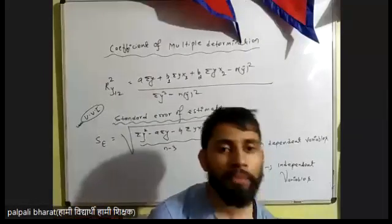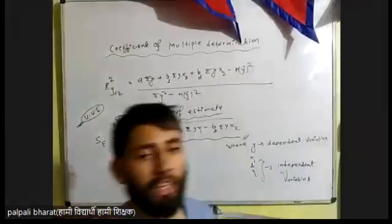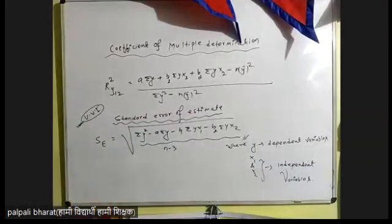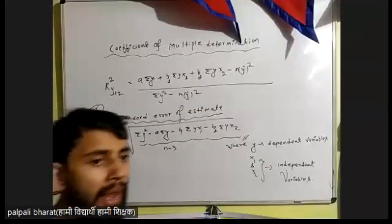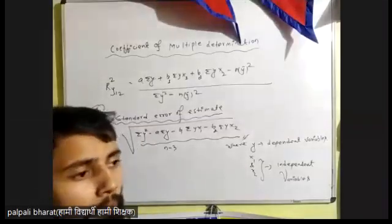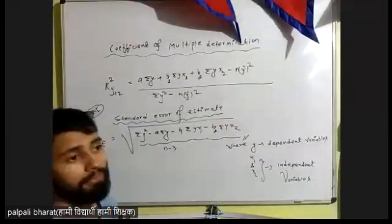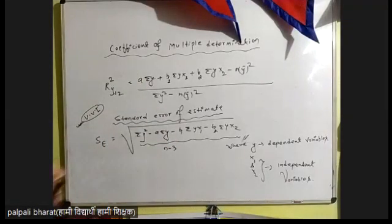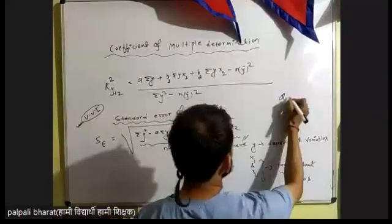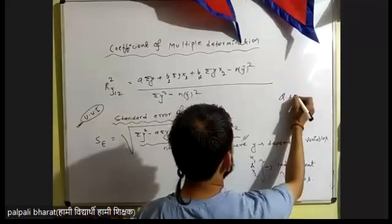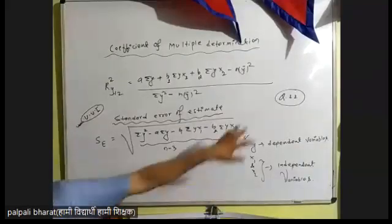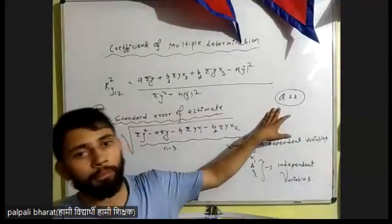We can find a simple multiple regression model — simple regression model. We can find out that there is a parabolic expansion. The example is important. Exercise question number 11, which is in chapter number 3.